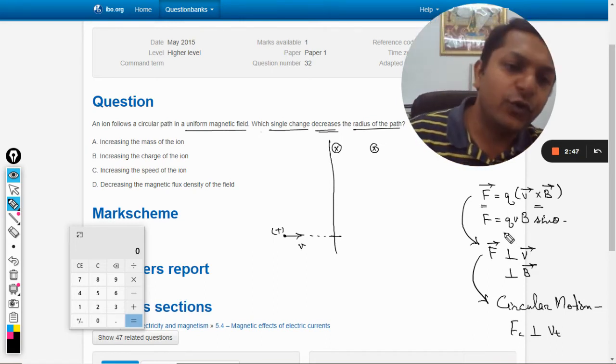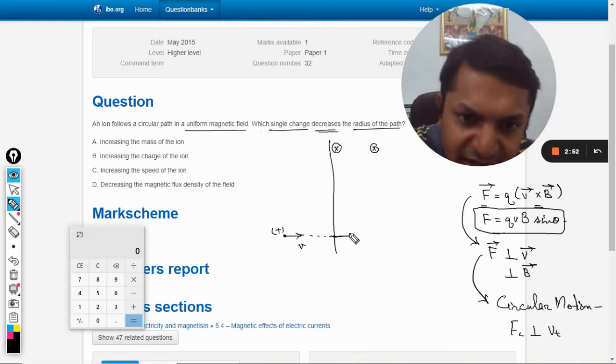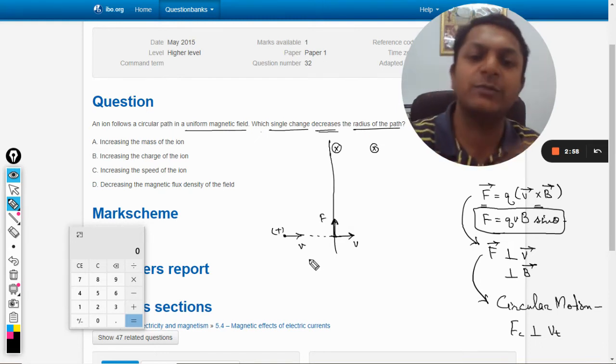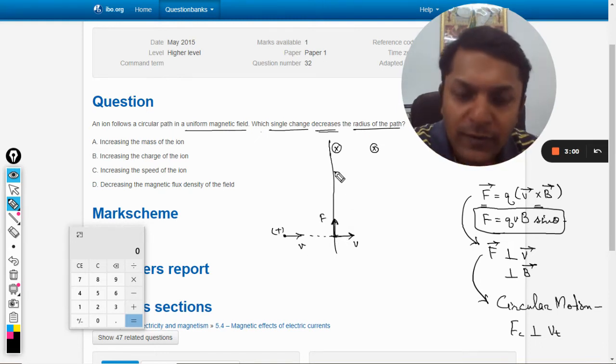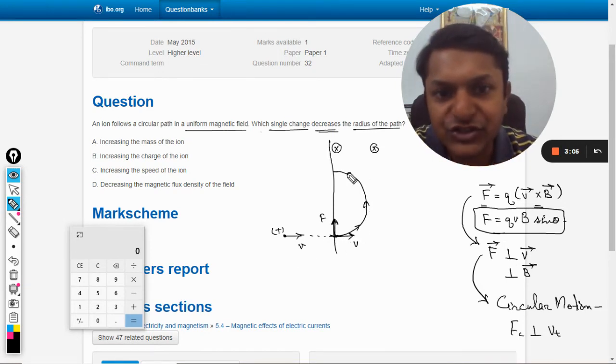Hence this force is acting like centripetal force. So when this charge enters, this is the velocity vector, it is being acted upon by a force vector which is perpendicular to it, so it moves like this in this circular fashion.